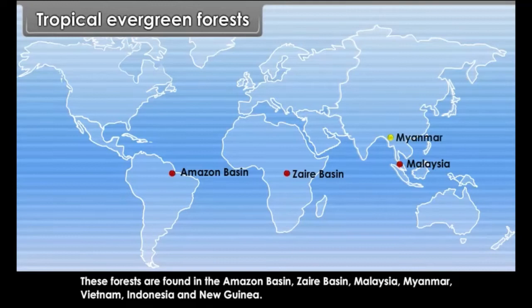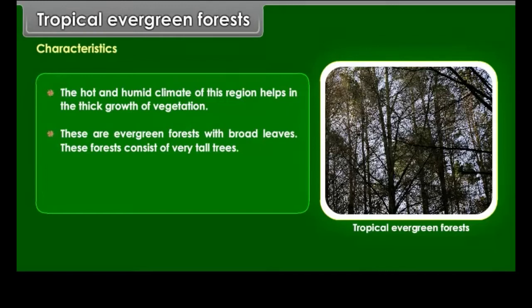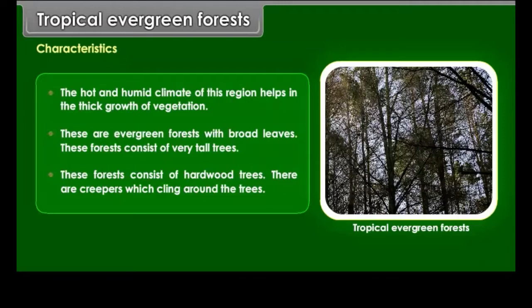Characteristics: The hot and humid climate helps in the thick growth of vegetation. These are evergreen forests with broad leaves, consisting of very tall hardwood trees. There are creepers which cling around the trees. The main species of trees are mahogany, ebony, bamboo, sandalwood, rosewood, rubber trees, etc.